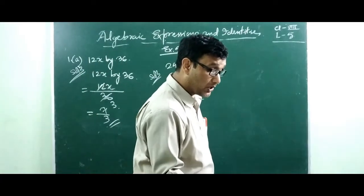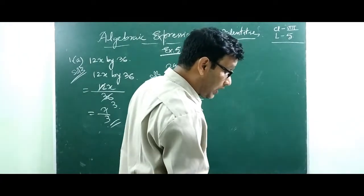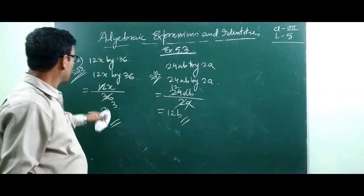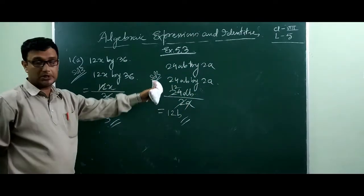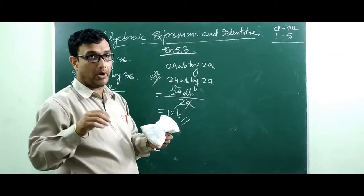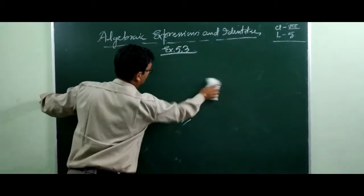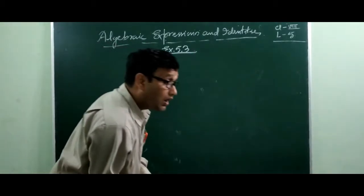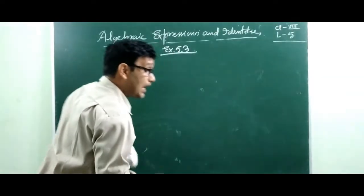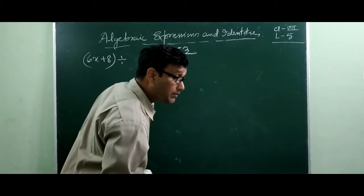Now see question number 2. Here the numerator is a binomial — meaning two terms. Now binomial terms will be divided by a whole number. The first question is: 6x plus 8 divided by 2.